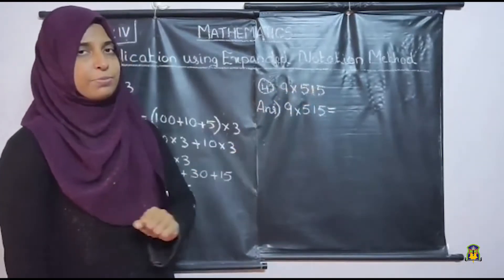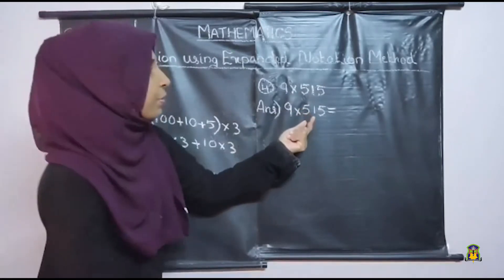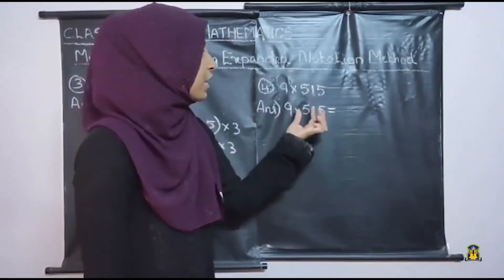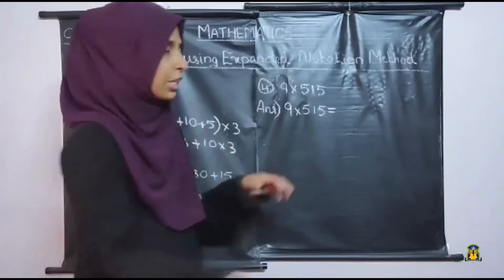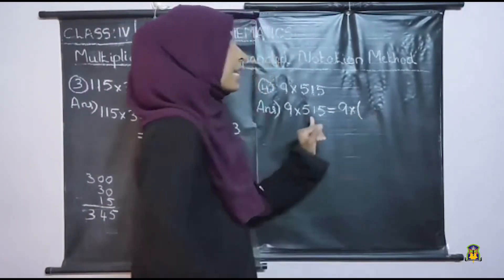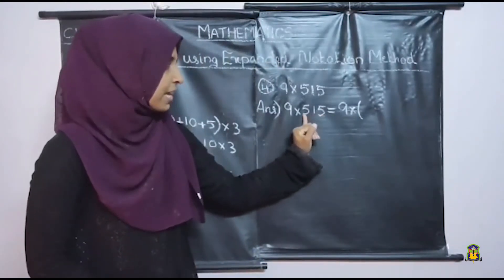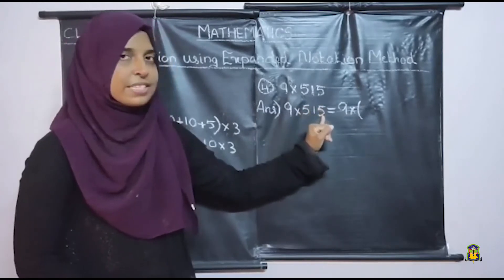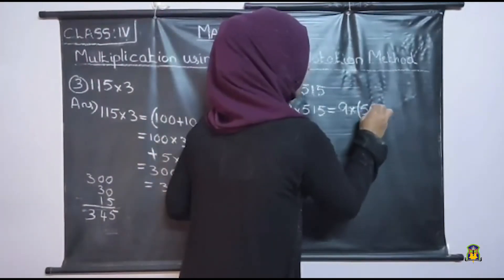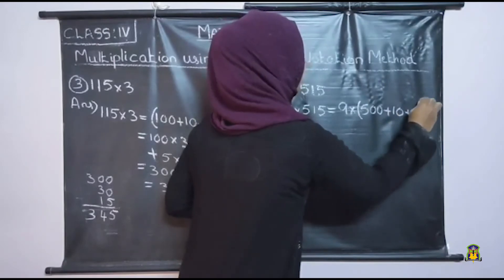The next question: 9 into 515. Here 9 is a one-digit number and 515 is a three-digit number. So the first step is we want to write 515 in its expanded notation. Here 5 is in the hundreds place, 1 is in the tens place, and 5 is in the ones place. So its expanded notation is 500 plus 10 plus 5.